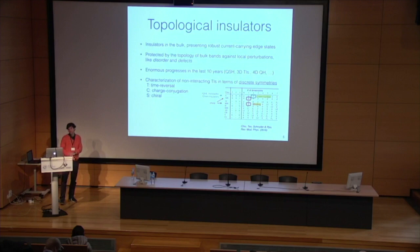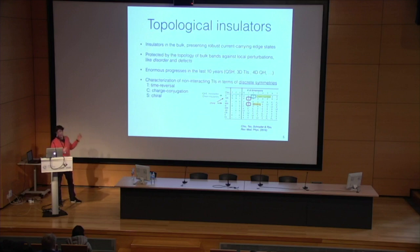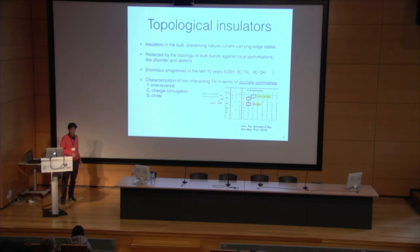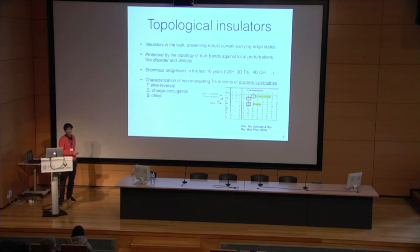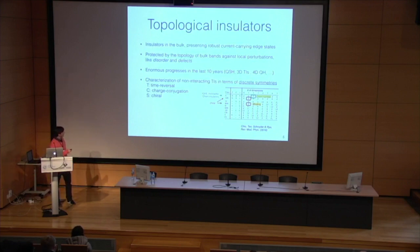There has been enormous progress in the study of these materials in the past 10 years especially — the field has really exploded. For example, quantum spin Hall effect has been studied, three-dimensional topological insulators, four-dimensional quantum Hall states — both theoretically and experimentally. These topological insulators are characterized in terms of the discrete symmetries they satisfy or break. In particular, the symmetries are time reversal, charge conjugation, and chiral symmetry.